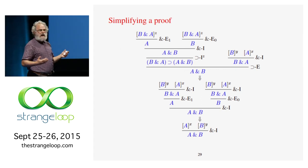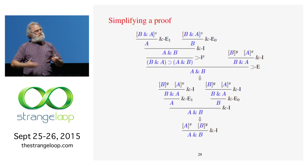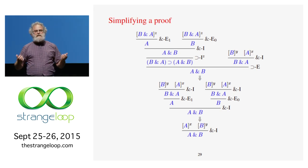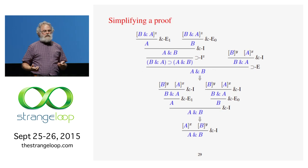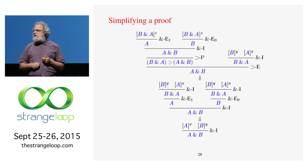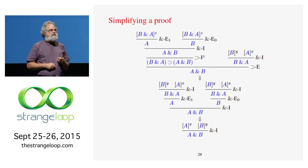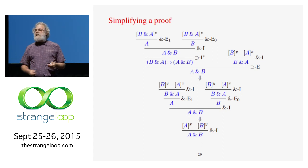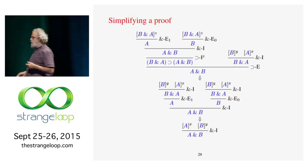Why did Gentzen care about this? Knowing that proofs could always be done in a direct way, not roundabout, is cool — but in particular, one of the formulas you have is "false," and a logic is consistent if you cannot prove false. If you did have a proof of false, the subformula property tells you the proof would consist only of subformulas of false. But there are no subformulas of false. So it's very easy to look at the proof rules, see there's no rule that ends in false, and therefore you couldn't get it — giving a simple proof of consistency.